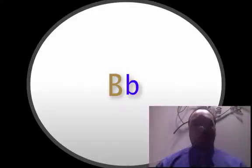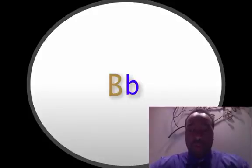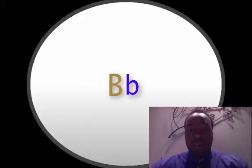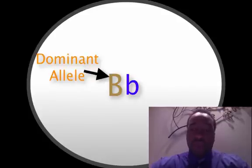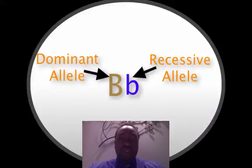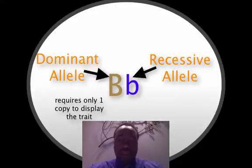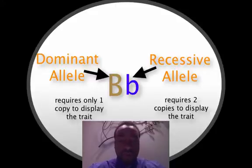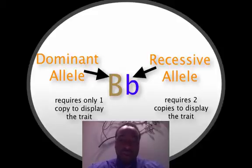Alleles can be represented by letters. Big B represents brown while little b represents blue. This is the case because the brown eye allele is considered dominant while the blue allele is considered recessive. Dominant alleles only require one copy to display the trait, but recessive alleles require two copies to display the trait. So basically, dominant alleles hide recessive alleles — for example, brown is dominant over blue.